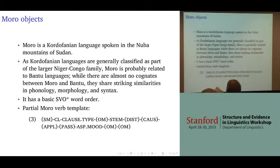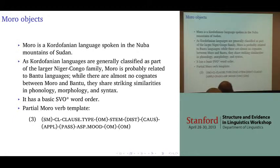We're going to be doing this in the context of objects in a language called Moro. Moro is a Kordofanian language spoken in the Nuba Mountains in Sudan. As a Kordofanian language, it's probably distantly related to Bantu languages. Moro shows many striking similarities to Bantu in terms of syntax.